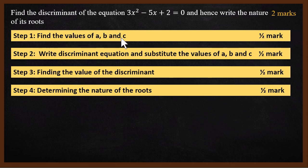The first step is to find the values of a, b, and c by comparing with the standard equation. The second step is to write the discriminant equation and substitute the values of a, b, and c. The third step is finding the value of the discriminant. The fourth step is determining the nature of the roots using the discriminant value.